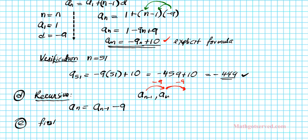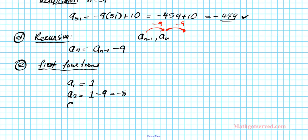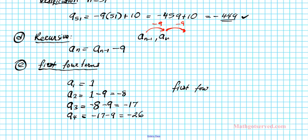Lastly, we have to find the first four terms of the sequence. The first term A1 = 1. The second term A2 = A1 - 9 = 1 - 9 = -8. The third term A3 = -8 - 9 = -17. The fourth term A4 = -17 - 9 = -26. So our first four terms are 1, -8, -17, and -26.